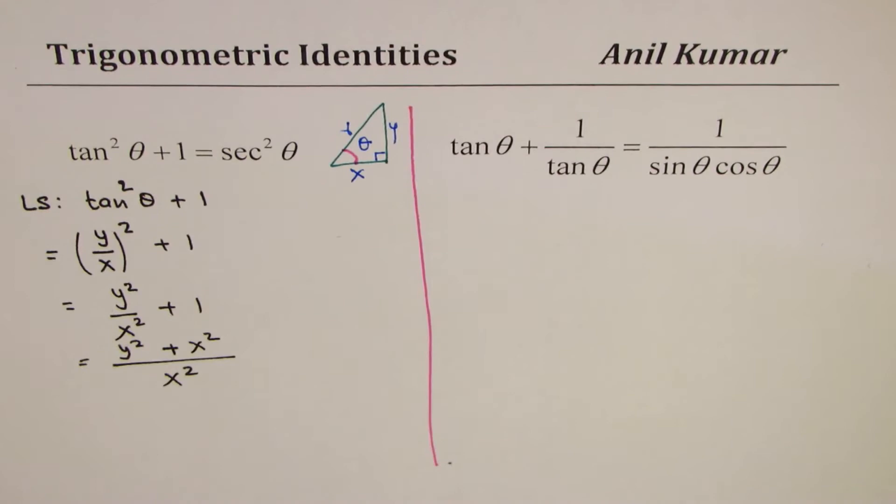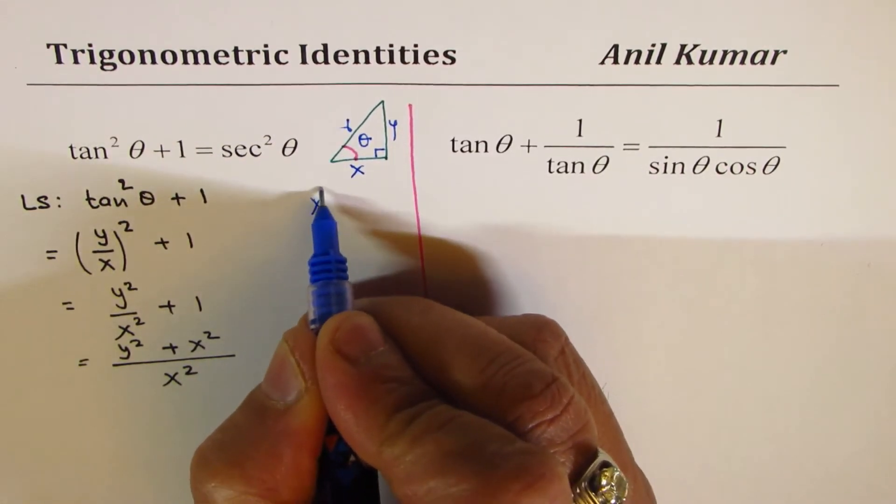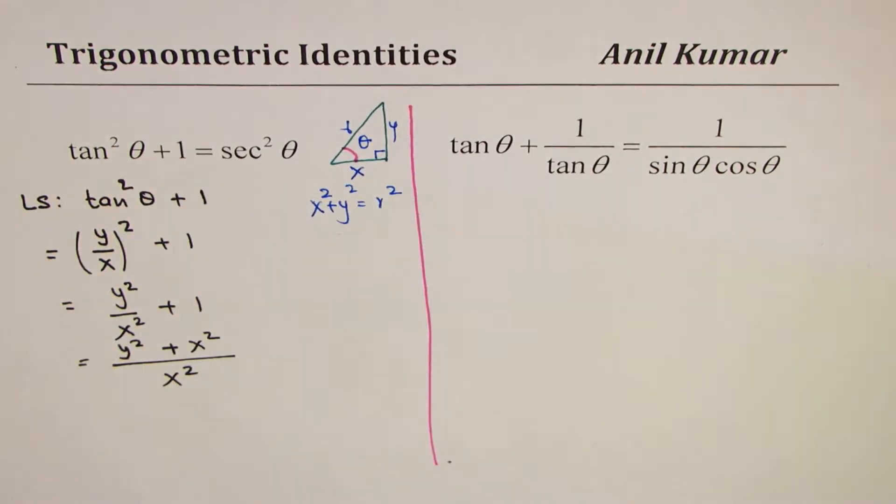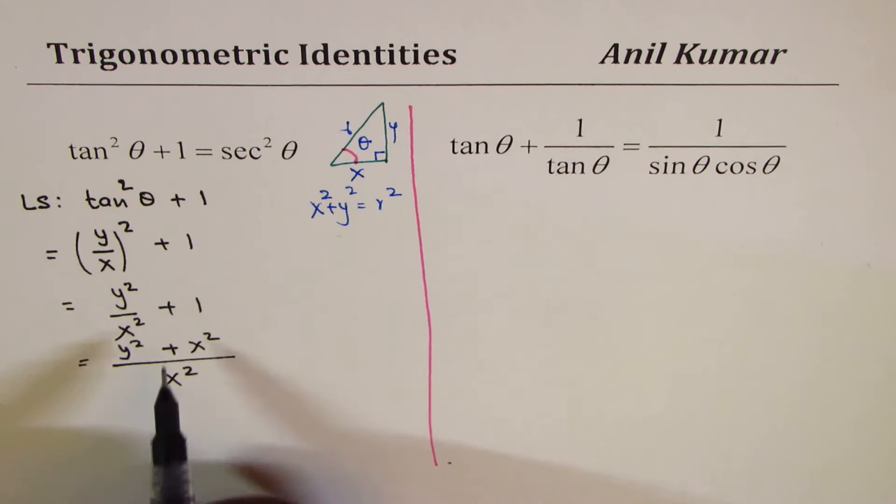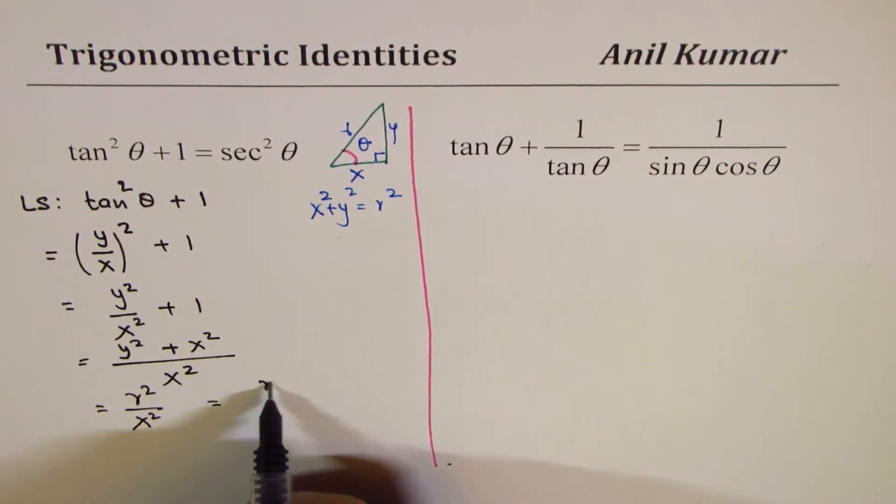Now, what is y squared plus x squared? Well, as you can see here, that is r squared. So, applying the Pythagorean theorem, x squared plus y squared is indeed equals to r squared. So, I am going to replace the numerator by r squared. So, we have this numerator as equals to r squared over x squared, which is same as r over x whole square.